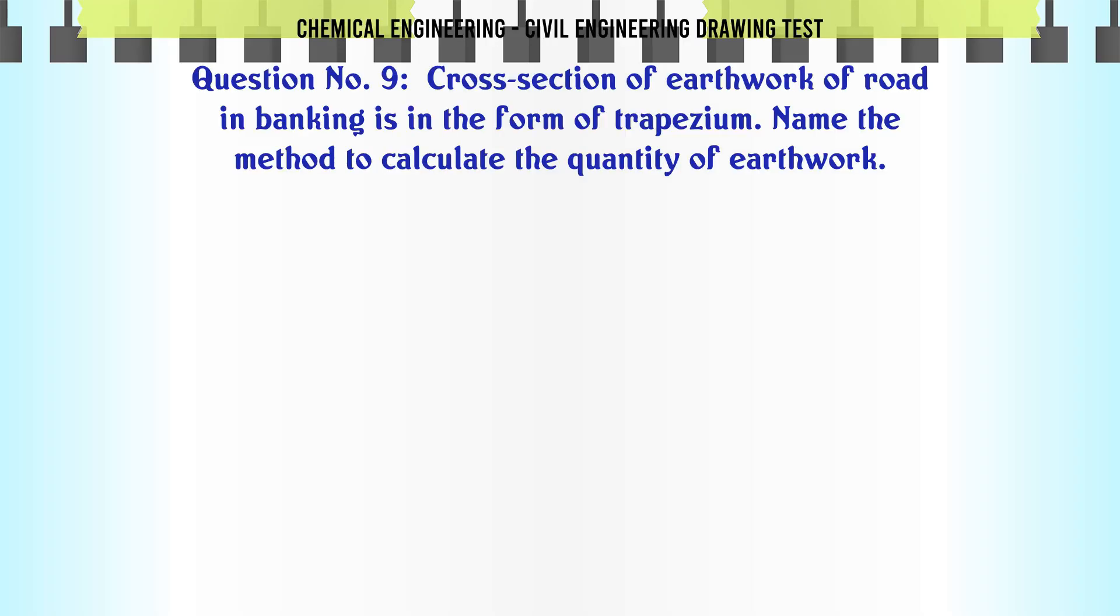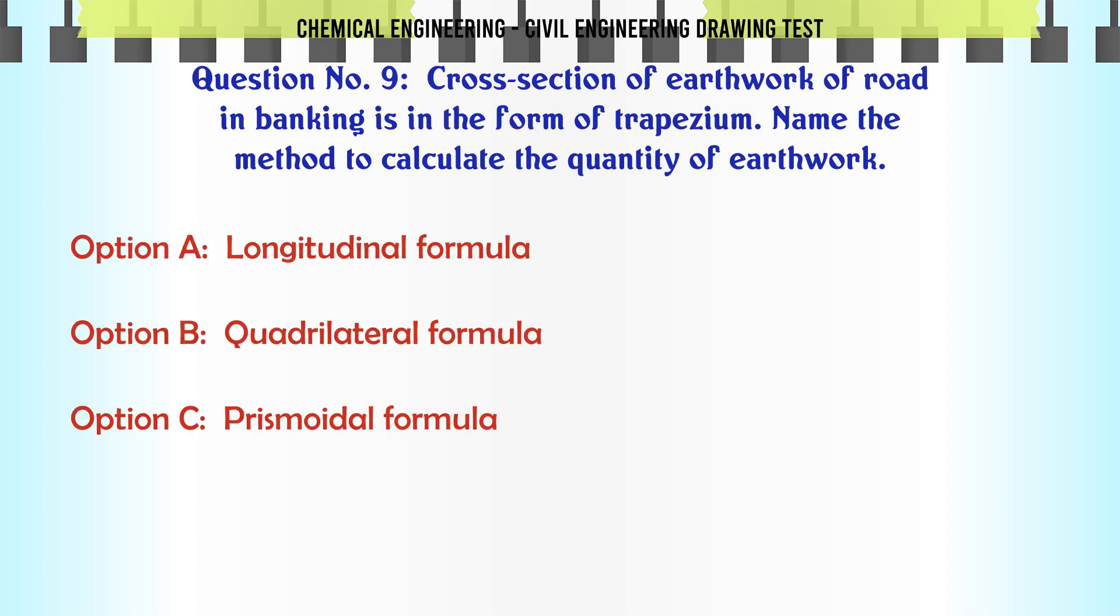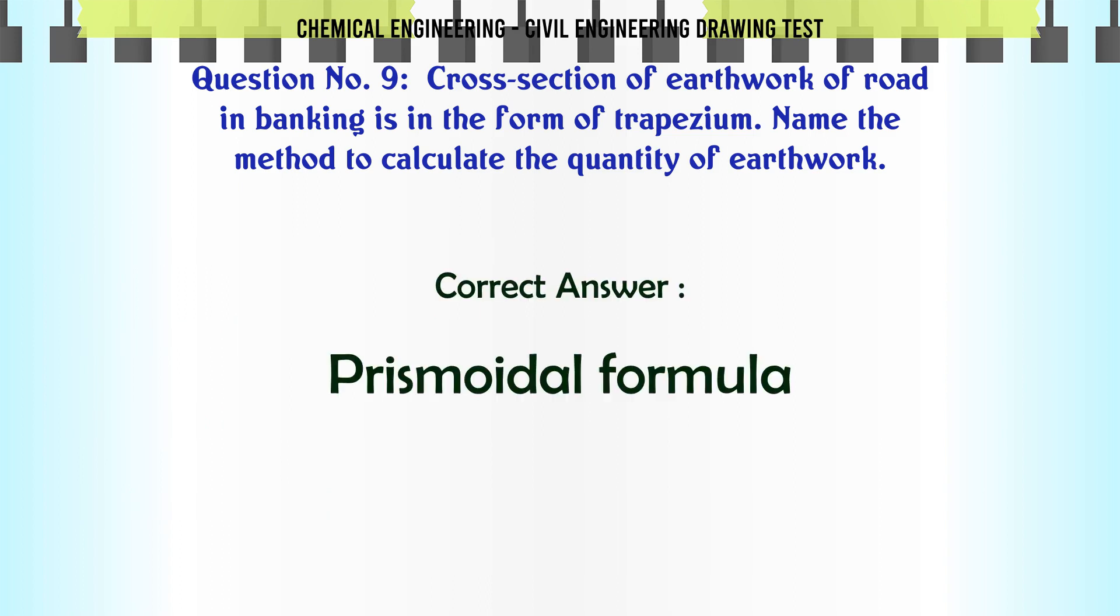Cross section of earthwork of road in banking is in the form of trapezium. Name the method to calculate the quantity of earthwork. A. Longitudinal formula. B. Quadrilateral formula. C. Prismoidal formula. D. Trapezium formula. The correct answer is Prismoidal formula.